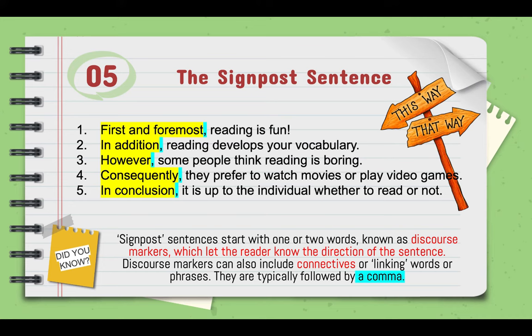The signpost sentence, as the name implies, begins by giving the reader a direction or idea about where the sentence is heading — a bit like driving down a highway. Another way to think of a signpost word is as a discourse marker, which is the more grammatically correct term. Discourse markers allow us to have a fairly clear idea about what to expect in a sentence or paragraph before we've even read it. They can include connectives or linking words or phrases, and are usually followed by a comma. For example, 'first and foremost' signals that the sentence will tackle the first point.